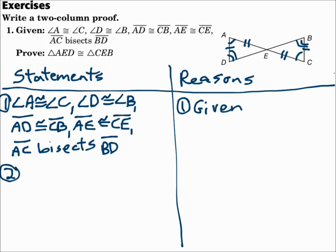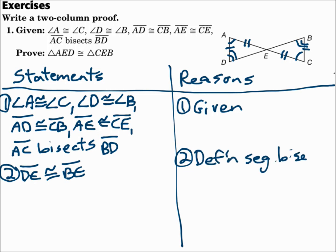Now I know two pairs of angles that are congruent and two pairs of sides that are congruent. How can I get the third pair of angles and the third pair of sides? Look at what else you're given. Segment AC bisects segment BD, so segment BD is cut in half, and each of those halves is that third pair of segments. Segment DE is congruent to segment BE because segment AC bisected segment BD — that's the definition of a segment bisector: it cuts a segment into two congruent parts.